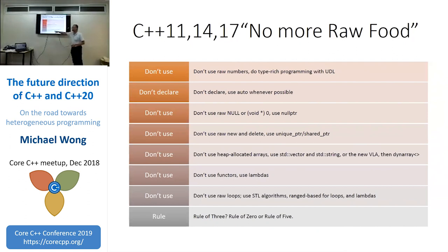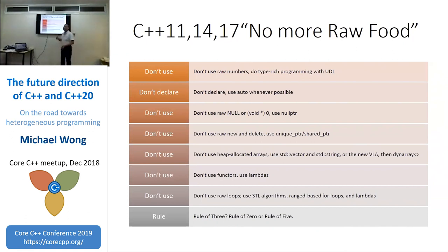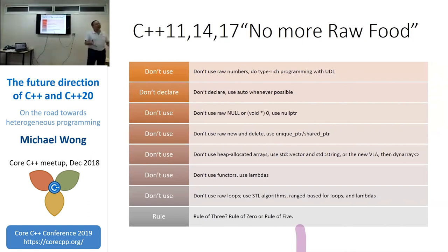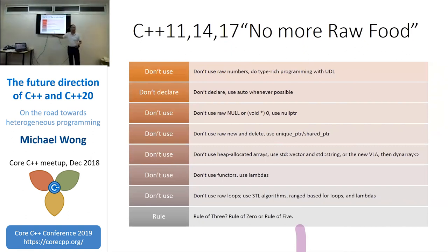One specific rule to remember is there used to be a rule of three: if you have a constructor or destructor, you should also have a copy constructor and copy assignment constructor. Nowadays that has expanded but also contracted. On one hand you might need the rule of five, which adds a move constructor and move assignment. On the other hand, if you're using a value type, you actually don't need any of these — it goes back down to a rule of zero.